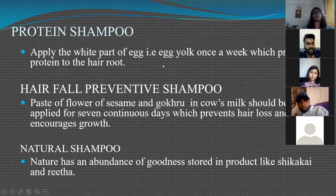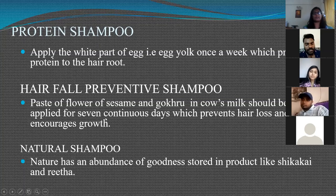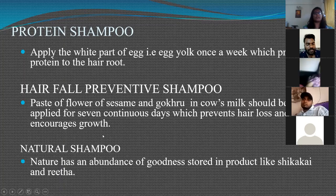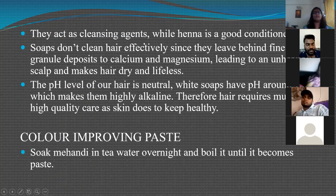Protein shampoos can be made from the white part of an egg. For a hair fall preventive shampoo, a paste of sesame flowers, gokuru, and cow's milk applied for seven continuous days can prevent hair loss and encourage hair growth. Nature has an abundance of goodness in products like shikakai and rita, which act as cleansing agents. Henna or mehendi is another important herbal ingredient used as a good conditioner.